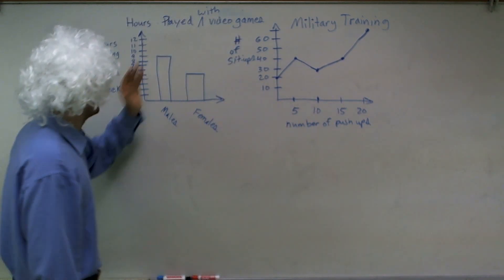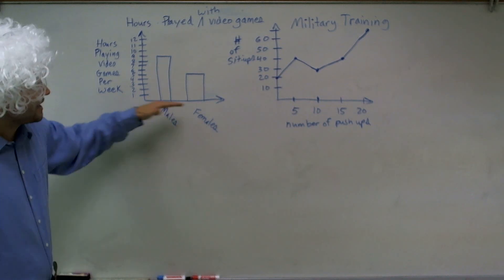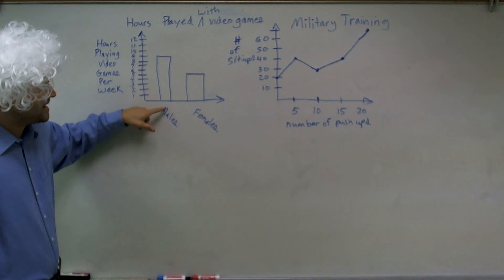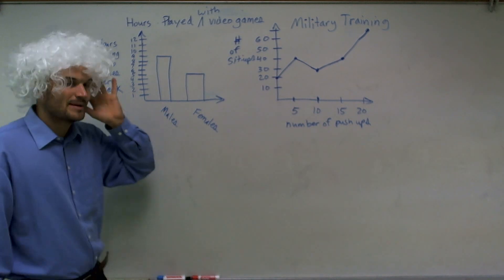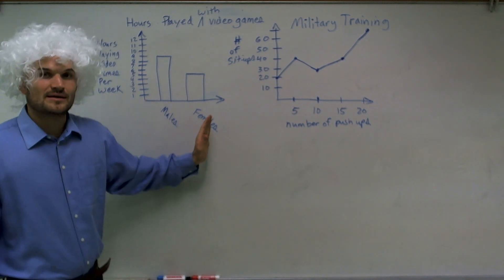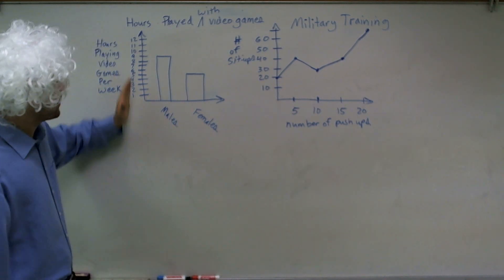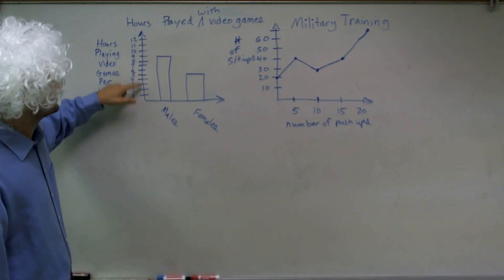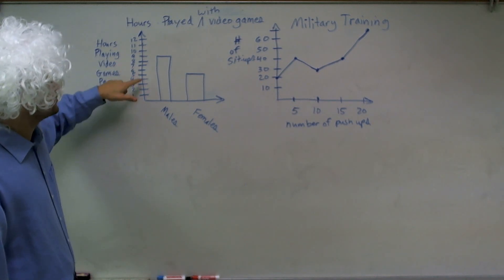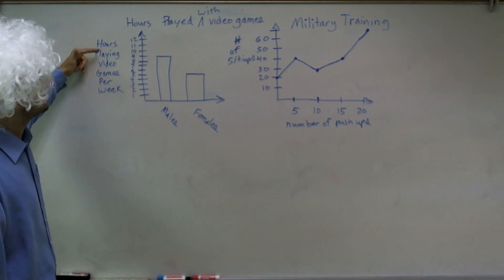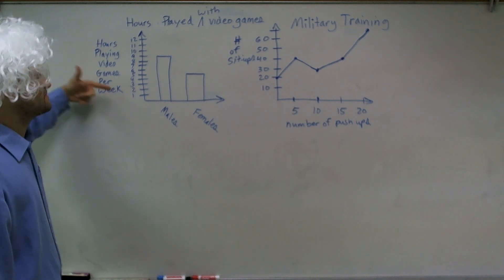So let's take a look at the hours played. On our x-axis here, we have our males and our females. So that's the information provided on the x-axis is a male and a female's part of data. On the y-axis, you can see we're labeled in going in terms of ones. One, two, three. That's our units. And what you can see is that's the hours played of video games per week.